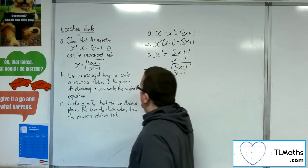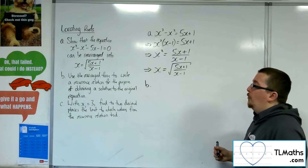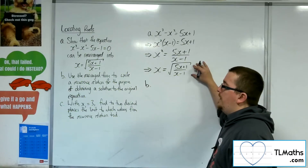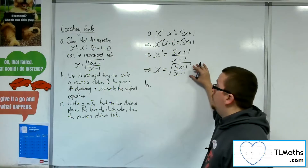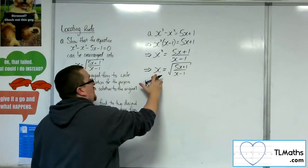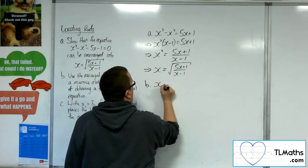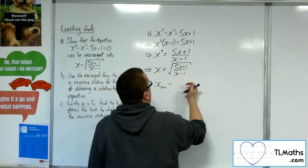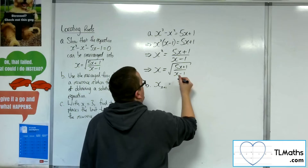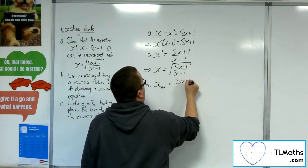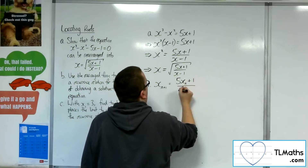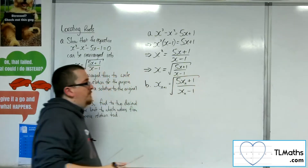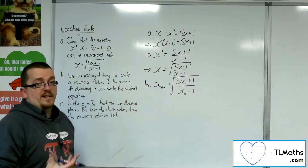Part b: use the rearranged form — this form here — to write a recurrence relation for the purpose of obtaining a solution to the original equation. The x that stands by itself will become x subscript n plus 1, and the x's on the right-hand side will become x_n's. So the recurrence relation is: x_{n+1} = √((5x_n + 1) / (x_n − 1)).